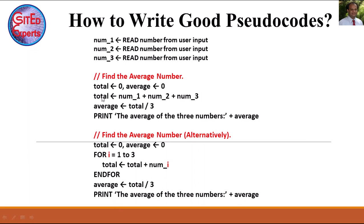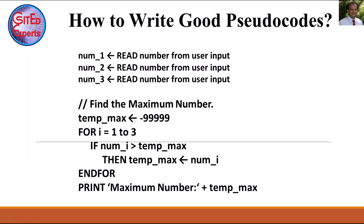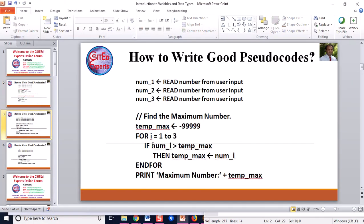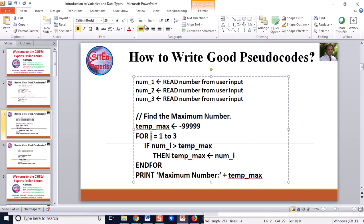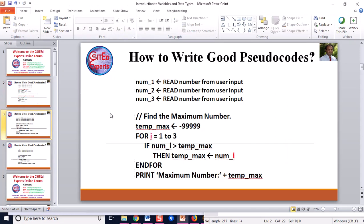This loop replaces the direct summation line. If you understand this, you can find the average of any set of numbers — five, ten, or twenty. For larger sets we usually use arrays; in another video I will show how to use the array concept in writing pseudocode. Now let me move on to finding the maximum value of these three numbers.